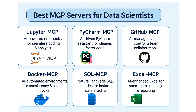GitHub MCP is the next step after PyCharm. Once you've created a project, you can manage it on GitHub — pull, push, commit, change files — all can now be done using AI. Just ask it to push, and all the steps will be taken by AI to handle your GitHub as well.